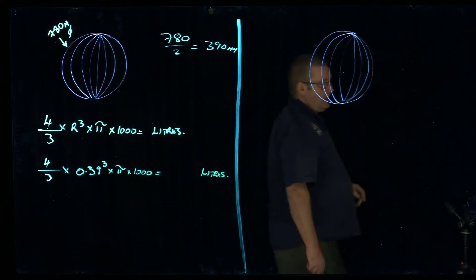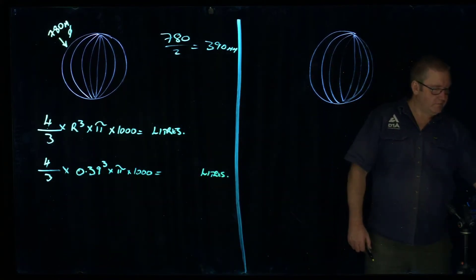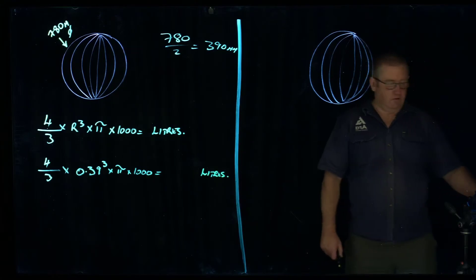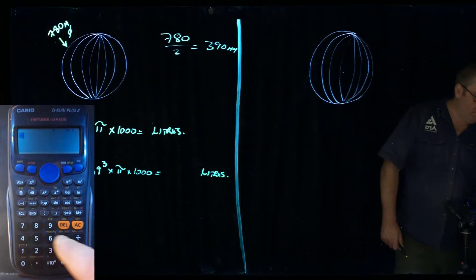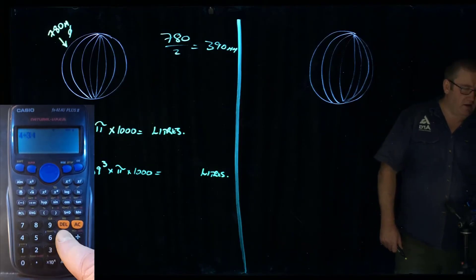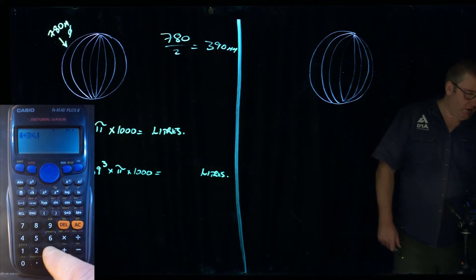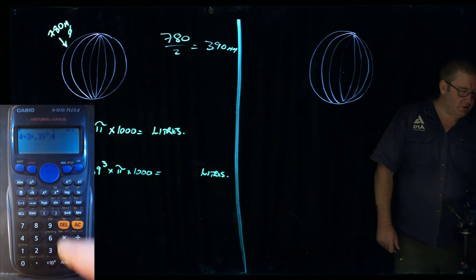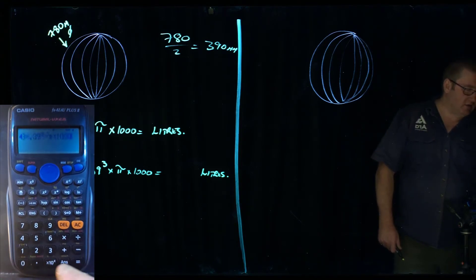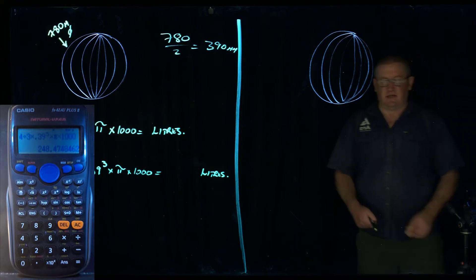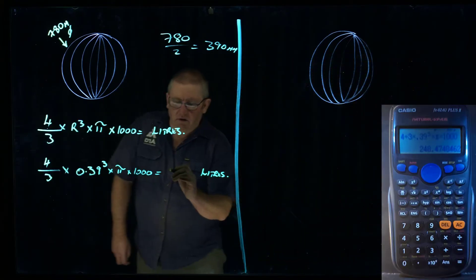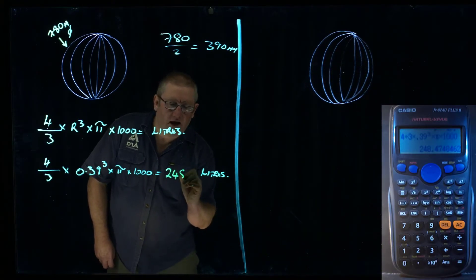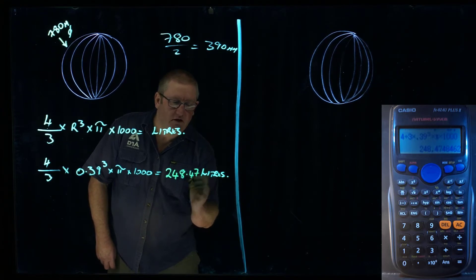And that gives us 248.473. So on to the calculator. 4 divided by 3 times 0.39 cubed times pi. And then we times it by our 1,000. And that gives us 248.47 litres.